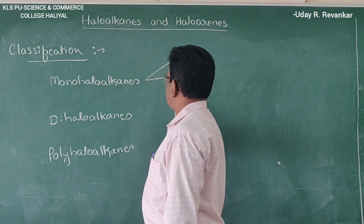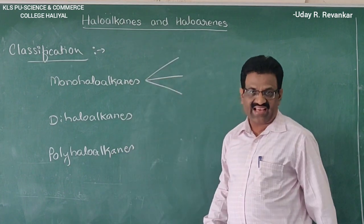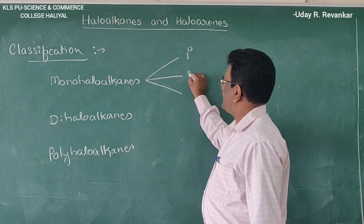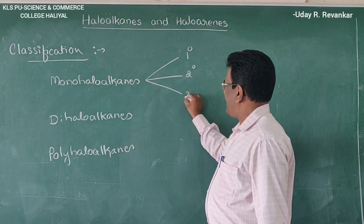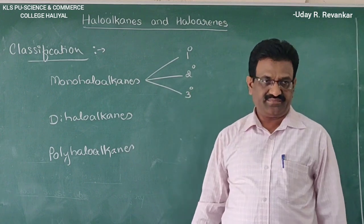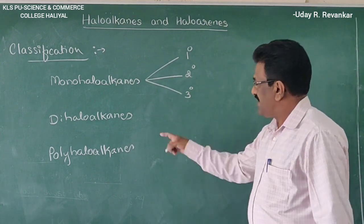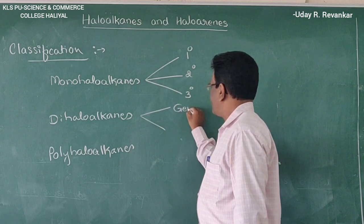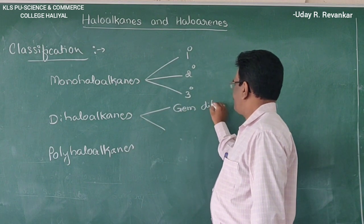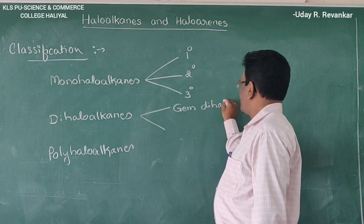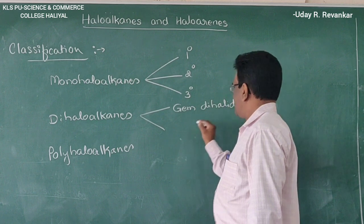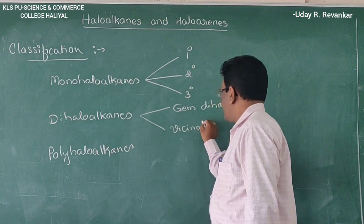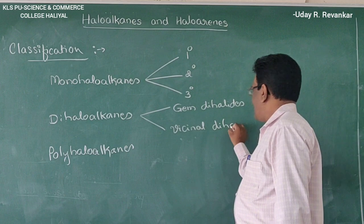Monohalides are further classified as primary, secondary, and tertiary halides. Dihalides are classified as gem dihalides and vicinal dihalides.